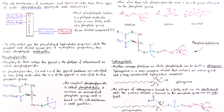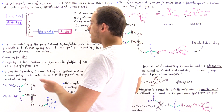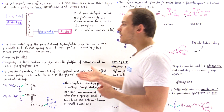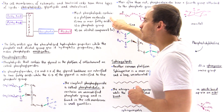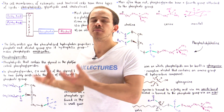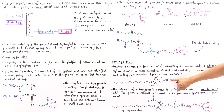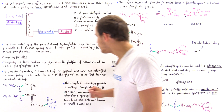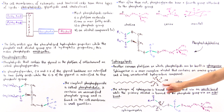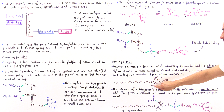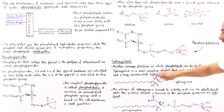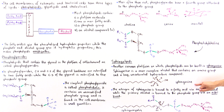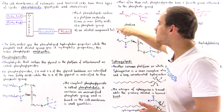Now let's move on to sphingolipids. The difference between a phosphoglyceride and a sphingolipid is the platform molecule. In phosphoglycerides, this component was a glycerol, but in sphingolipids the backbone is a much more complex alcohol molecule — sphingosine. Instead of a three-carbon alcohol, sphingosine has a primary alcohol, a secondary alcohol, a long unsaturated hydrocarbon chain containing a double bond, and an amino group with a positive charge. Sphingosine acts as the platform molecule that attaches all the other components.